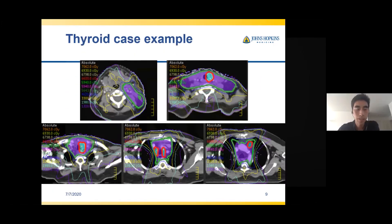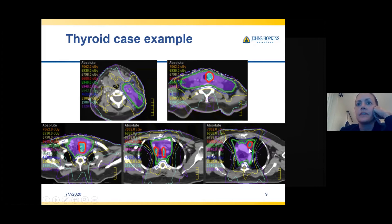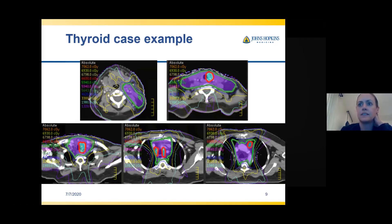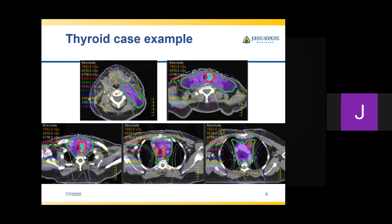We gave 66 Gy in 2 Gy fractions to the positive margin areas and 59.4 Gy to the upper mediastinal nodes, left levels 2 through 6, and right levels 3 through 6 — quite large fields. For the GTV and CTV: there was no residual gross disease except for one small unresected node. I tend to draw PTVs directly rather than doing CTVs with expansion, because routine expansions in the head and neck would put you into more normal tissues than intended.